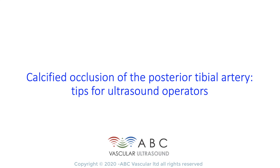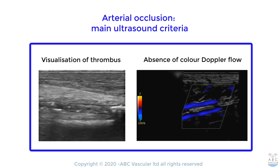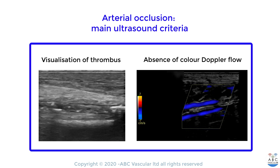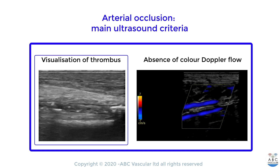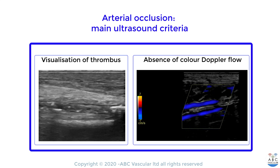Hi and welcome to this ABC vascular ultrasound case study on calcified occlusions of the posterior tibial artery, tips for ultrasound operators. Two are the main criteria that we use to determine the presence of an arterial occlusion: direct visualization of occlusive thrombus and absence of color doppler flow within the artery.